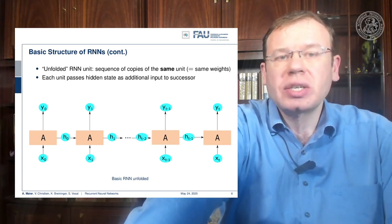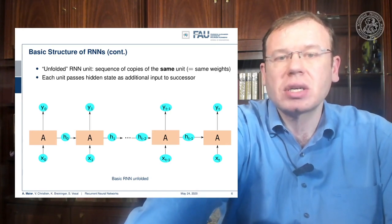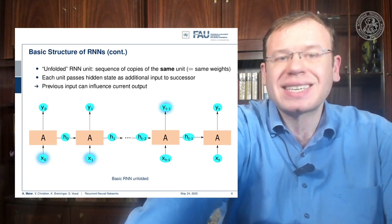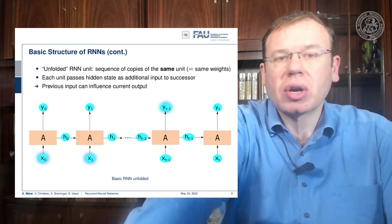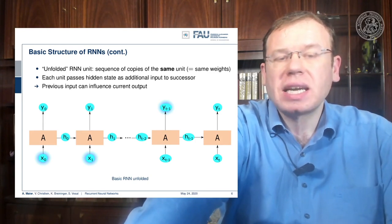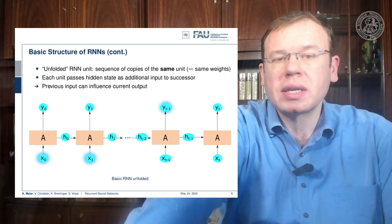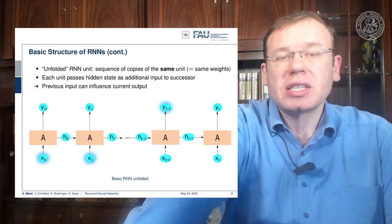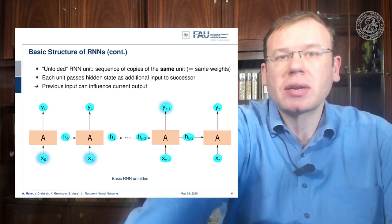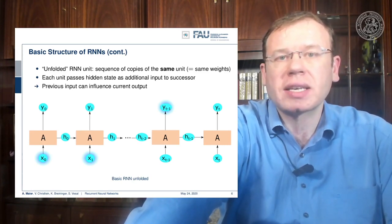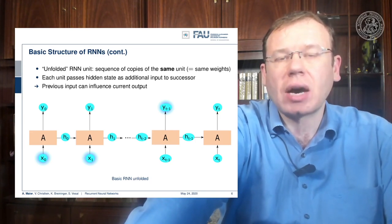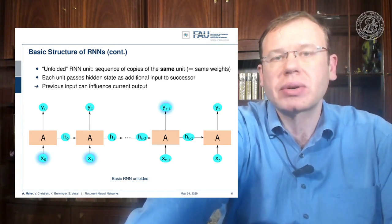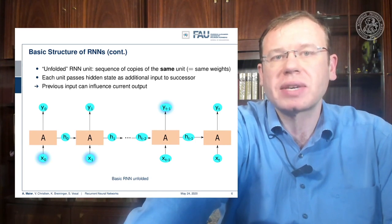So each unit passes on the hidden state as an additional input to the successor. And this means that the previous input can have influence on the current output. Because if we have seen X0 and X1, they can have an influence on YT-1 just because we have encoded the information that we observed X0 and X1 in the hidden state. So the hidden state allows us to store information and carry it through the entire network to a certain period of time where we then want to choose a specific action.